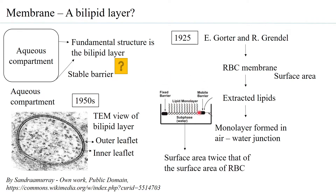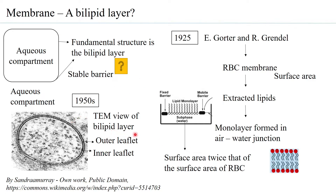When they calculated the surface area of this monolayer, they found that it is twice that of the surface area of the RBC itself. Therefore, they were able to conclude that the lipid membrane is actually a bilipid layer — if you unfold a bilipid layer into a single layer, you would have double the surface area. This was then confirmed by the transmission electron microscopic view that indeed the cell membrane is a bilipid layer.